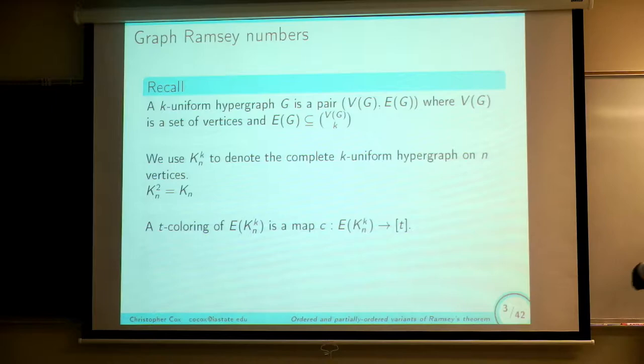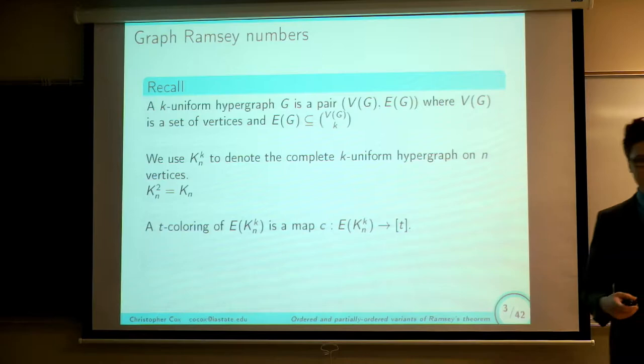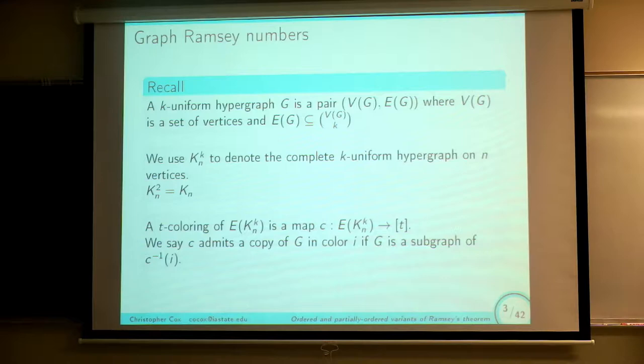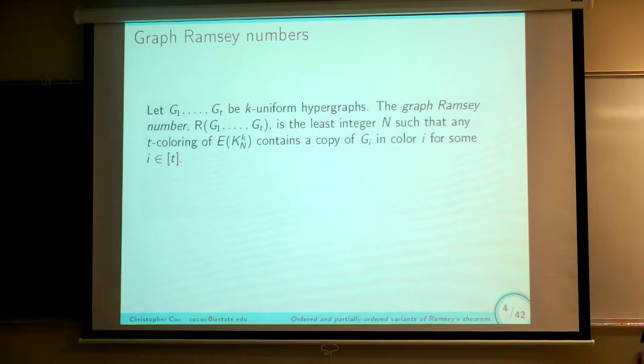As we're doing some Ramsey stuff, we need formal definitions of coloring. A T-coloring of the edge set of the complete graph is simply a mapping C from the edge set into the integers 1 through T — color 1, color 2, up to color T. We say that C admits a copy of a certain graph in color I if there's a copy of this graph where every single edge receives color I, meaning it's contained inside the inverse image of color I. Given T K-uniform hypergraphs G1 through GT, the Ramsey number R(G1,...,GT) is the least integer such that no matter how I color the complete graph, I'm always going to find a monochromatic copy of G_i in color I for one of the I's.